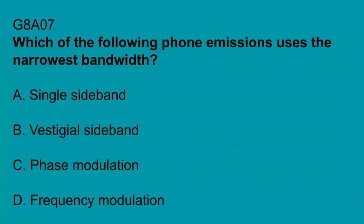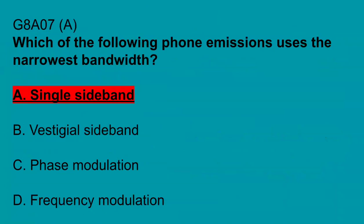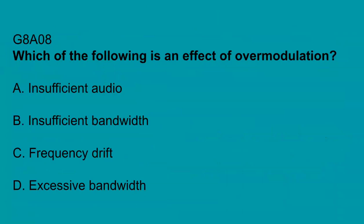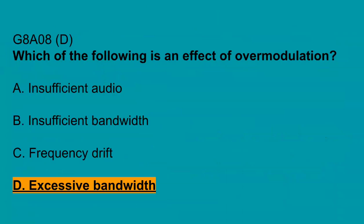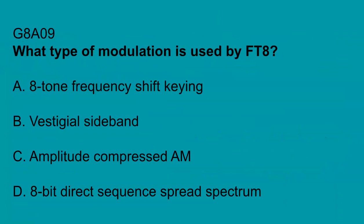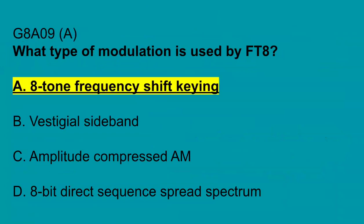G8A07: Which of the following phone emissions uses the narrowest bandwidth? Single sideband. G8A08: Which of the following is an effect of over-modulation? Excessive bandwidth. G8A09: What type of modulation is used by FT8? Eight-tone frequency shift keying.